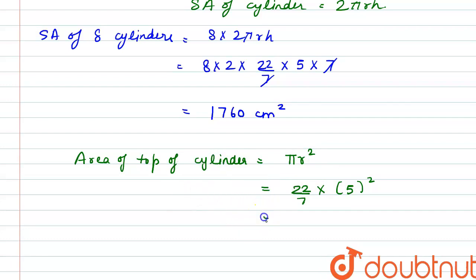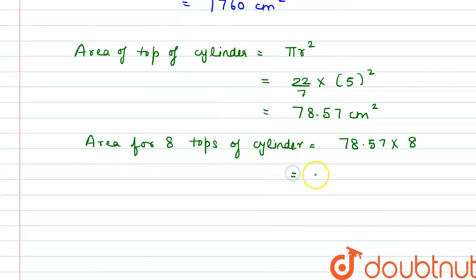So the value comes out to be 78.57 cm² for one cylinder or for one circular top. So the area for 8 tops of cylinder, it would be 78.57 multiplied by 8. So the area comes out to be 628.57 cm².